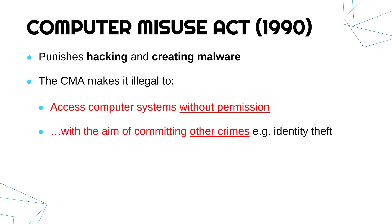Interestingly, this law also has a follow-on, more serious charge, which is if you're using a computer with the aim of committing other crimes. Using a computer to commit other crimes makes the offense more serious. For instance, you might hack into a system to steal data and commit identity theft, where you use somebody else's bank details to buy things.